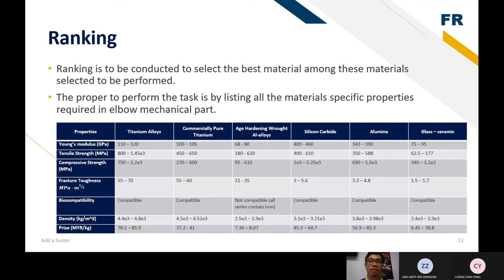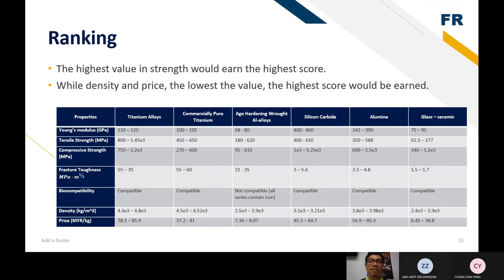The proper way to perform the task is by listing all the material-specific properties required in elbow mechanical parts. So here are the properties that we are seeking in producing a surgical implant: Young's modulus, tensile, compressive, flexibility, density, and price. For ranking, the highest the value in strength would earn the highest score. But while the density and price, the lowest the value, the highest score would be earned.